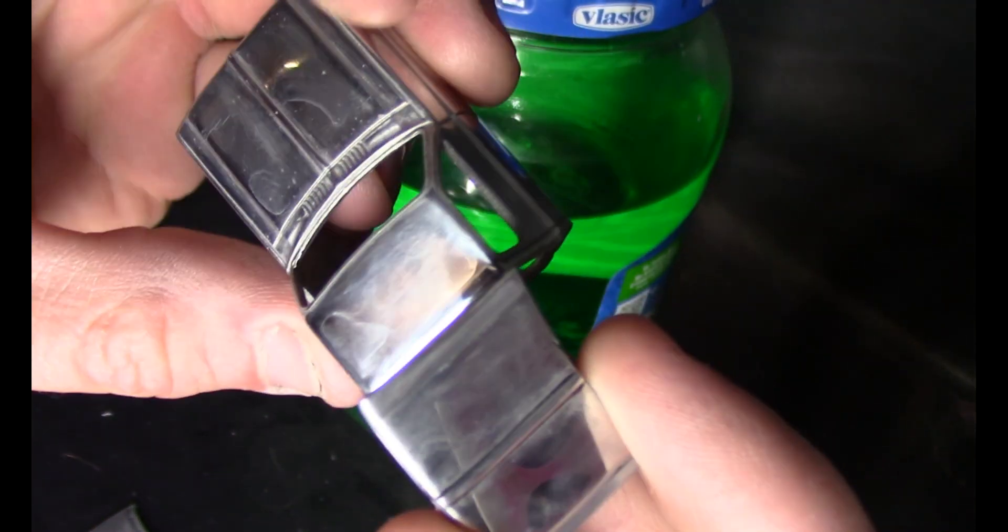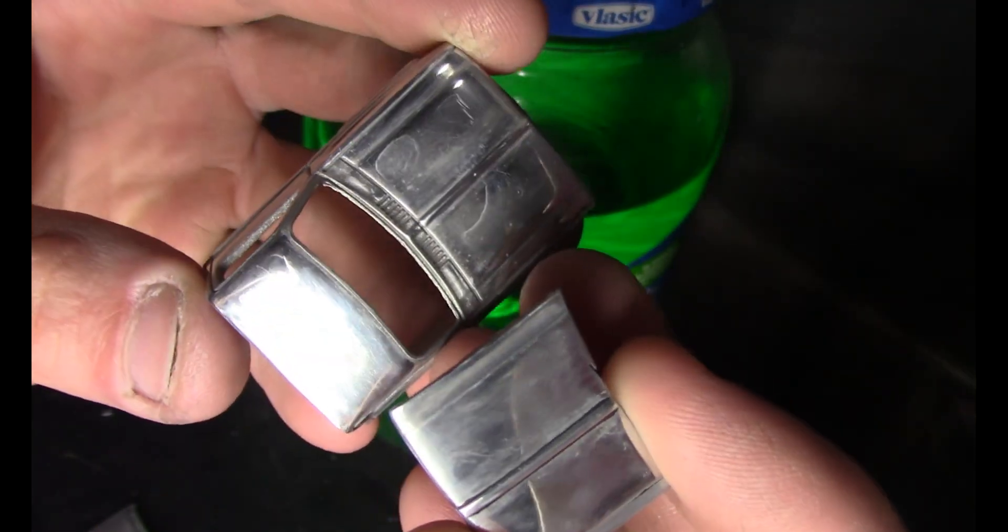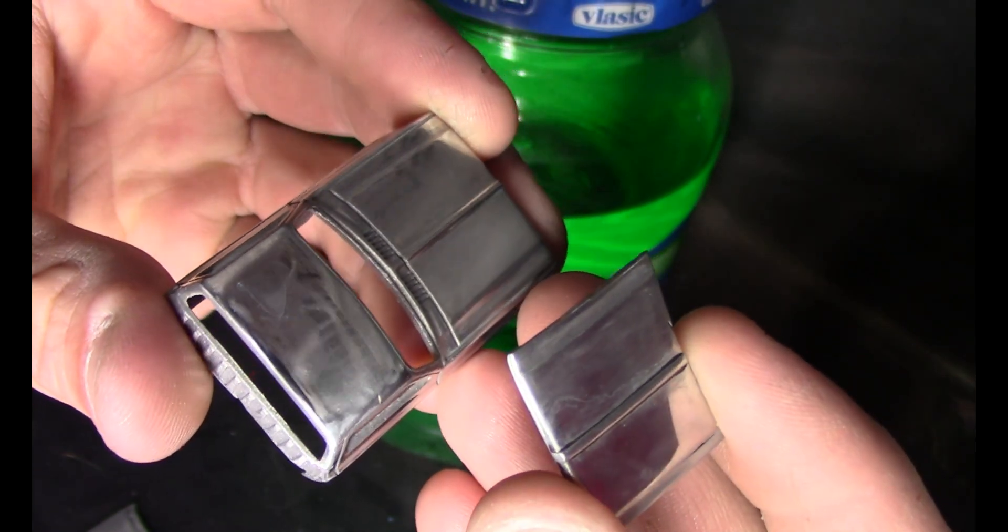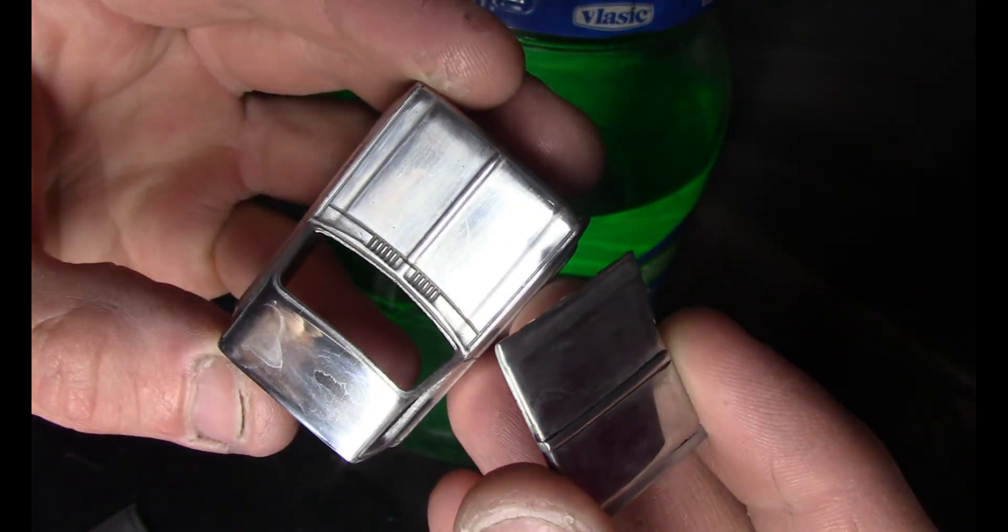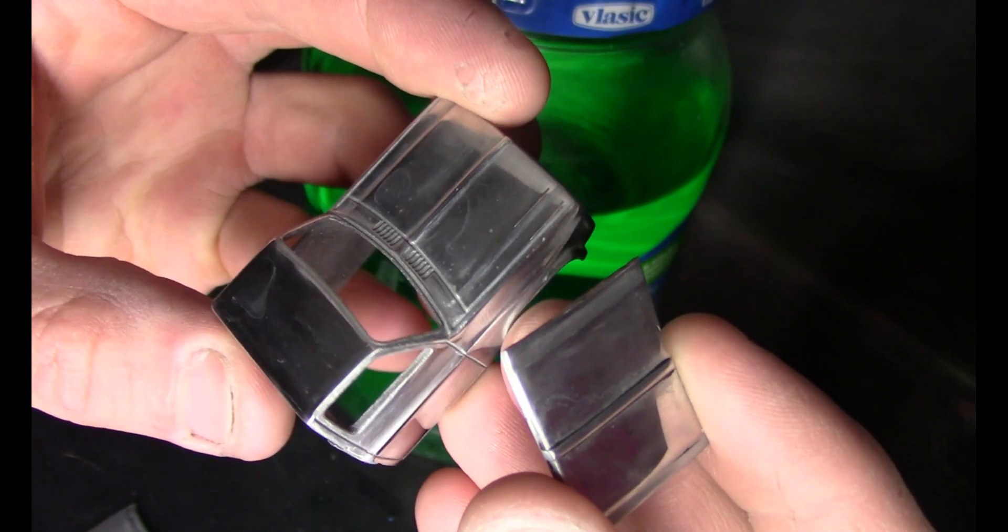Here's the truck body also at 12,000 grit. It's already looking real shiny, real reflective. I think these things are ready for some polish.